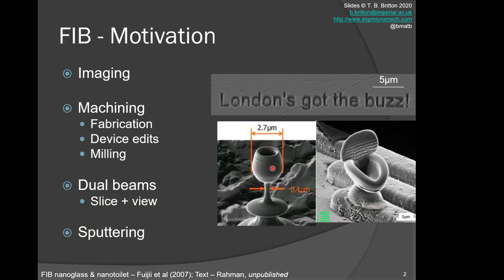So why do we talk about focused ion beam? First, if we want to image, we can look at samples using the FIB to create secondary electrons and secondary ions. We can also machine objects through fabricative bottom-up technology, additive layer manufacturing at the nanoscale. We can do device edits to correct, change, or create nanoscale structures, and we can mill structures to cut into objects and create interesting shapes in two and three dimensions.